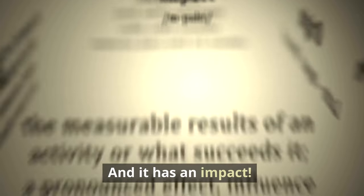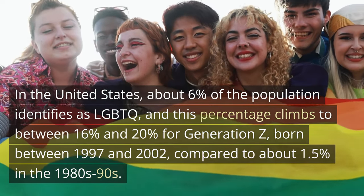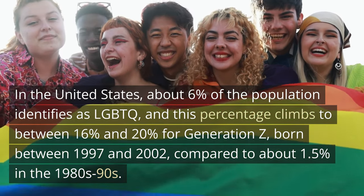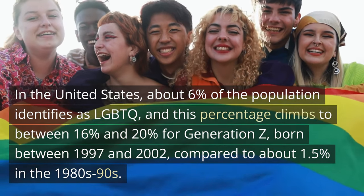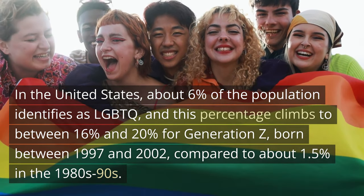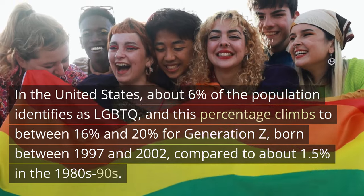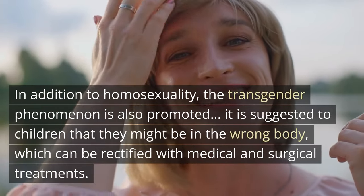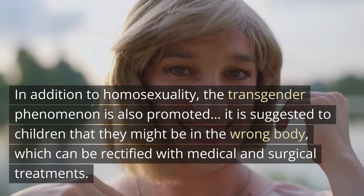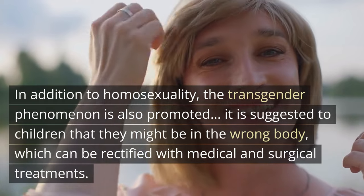And it has an impact. In the United States, about 6% of the population identifies as LGBTQ, and this percentage climbs to between 16% and 20% for Generation Z, born between 1997 and 2002, compared to about 1.5% in the 1980s and 90s. In addition to homosexuality, the transgender phenomenon is also promoted — it is suggested to children that they might be in the wrong body, which can be rectified with medical and surgical treatments.